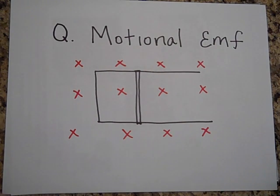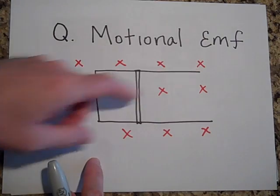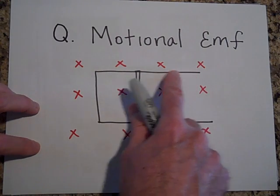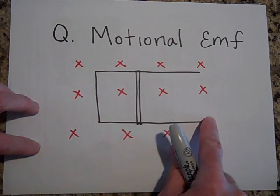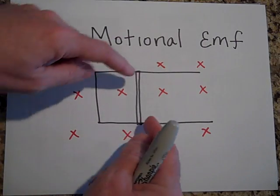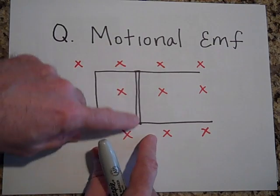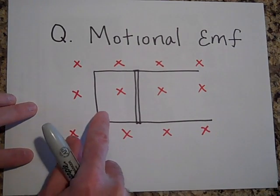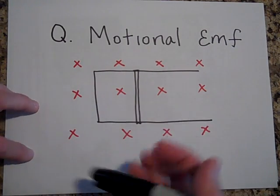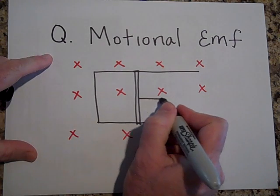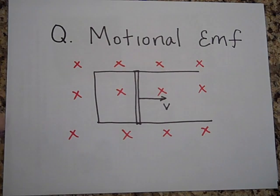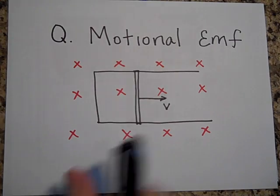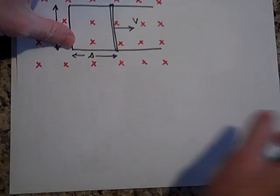I'd like to tell you about one application of Faraday's law called Motional EMF. That's when you have a metal piece shaped like a U-frame in a magnetic field, and on top of it you put a slidable bar — it's kind of like a trombone. This forms a loop, and if you pull the bar at a constant speed V, you will induce some current in this loop.